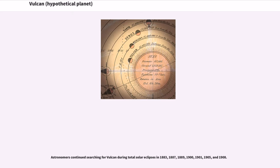Astronomers continued searching for Vulcan during total solar eclipses in 1883, 1887, 1889, 1900, 1901, 1905, and 1908. Outside of eclipses, many false alarms were triggered by round sunspots that closely resembled planets in transit.